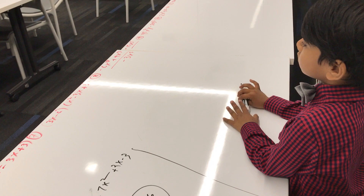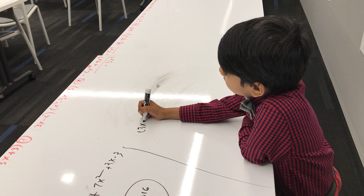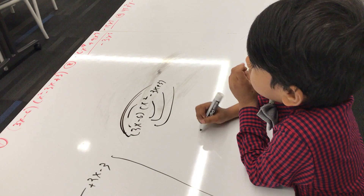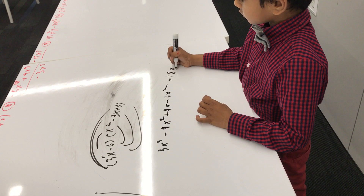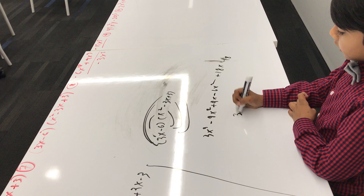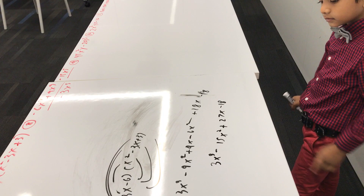Now comes the tricky part. We distribute each one one by one. Number 7: (3x minus 6)(x² minus 3x plus 3). Distribute one by one. So then: 3x³ minus 9x² plus 9x minus 6x² plus 18x plus 3 — I mean minus 18. So 3x³ minus 15x² plus 27x minus 18.